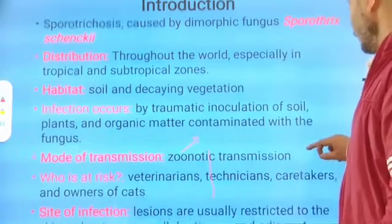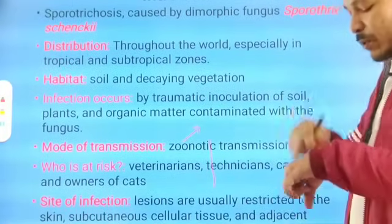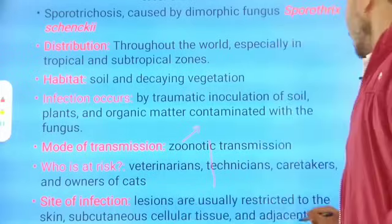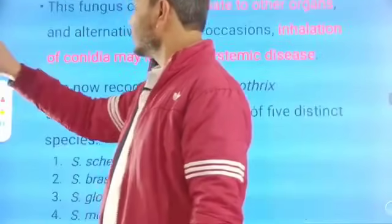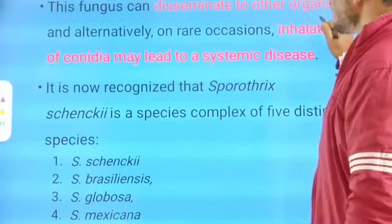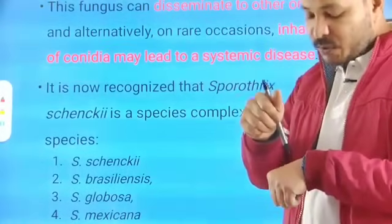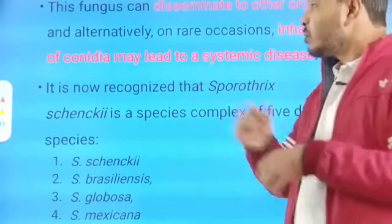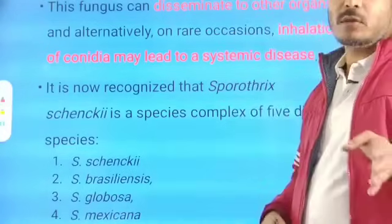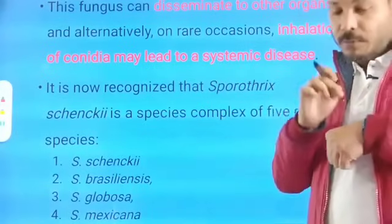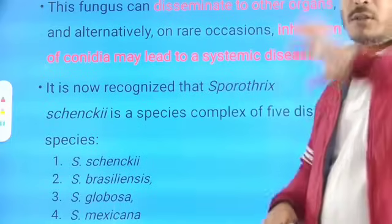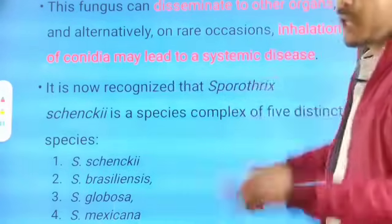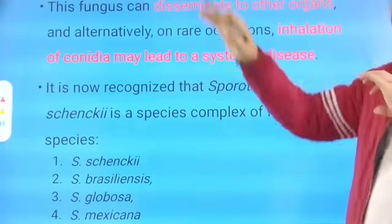The site of infection is generally restricted to the skin. If a thorn causes a break on the skin, the fungi affect skin, subcutaneous cellular tissue, and adjacent tissues. There is a possibility of dissemination to other organs if the fungi penetrate deeper parts — once they reach the blood, they may spread to other parts of the body.